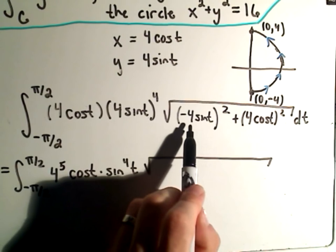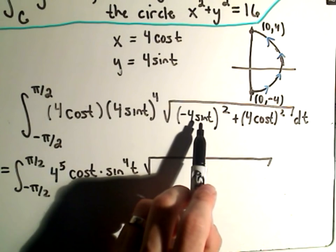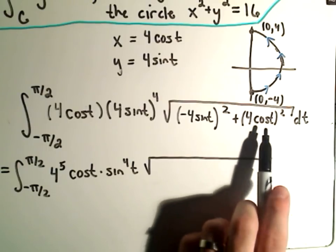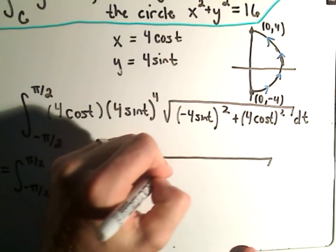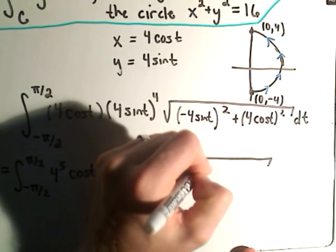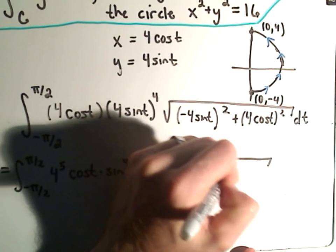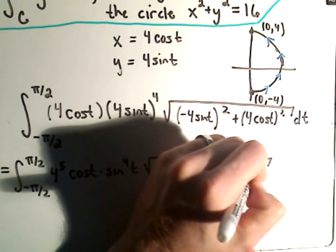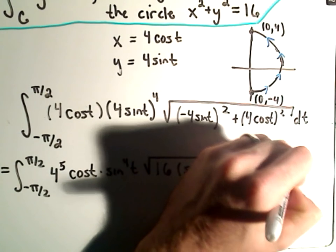Underneath the square root, notice I'm going to get a 16sin^2 and a 16cos^2. I could factor the 16 out and make it sin^2(t) + cos^2(t) dt.